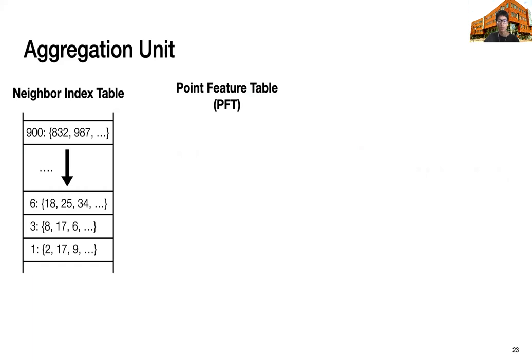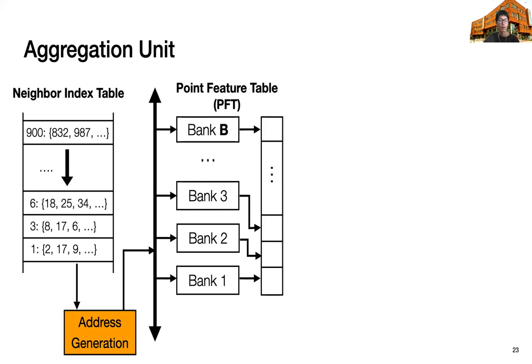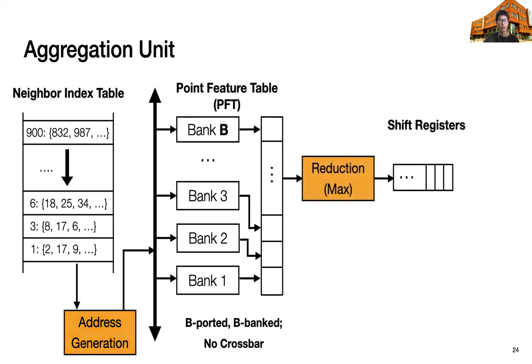Based on the accessing pattern of aggregation, we design our aggregation unit as following. It has a neighbor index table to store the central indices and their own neighbor indices. Each time, the address generation will read one row from the neighbor index table and try to access the point features from the point feature table or from the global buffer. Here, point feature table is designed as B independently addressed single port SRAM, similar as B port B bank SRAM with no crossbar. All banks will connect to a reduction unit to perform max operation, and shift generate maximum to the shift register. We wire the shift register back to the reduction unit in case we need to perform multiple rounds of reductions if necessary.